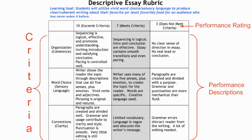We need to be careful that we don't just add in different categories based on other things we think are important. For example, conventions—capitalization, spelling, punctuation—while important to writing, might not necessarily have anything to do with the learning goal. We have to be careful that the criteria we list is tied to the learning goal and not just something we also feel is important to the assignment.